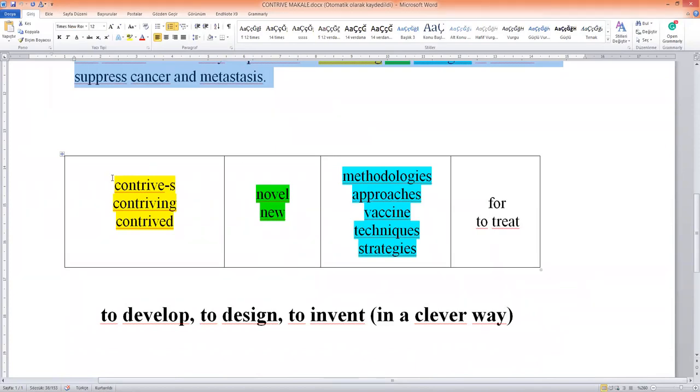Following my search, I prepared this for you. Here you will use a subject, after the subject you will use the verb in different forms, and after the verb you can use its collocated nouns: methodologies, approaches, vaccine, techniques, strategies.